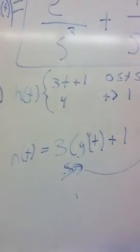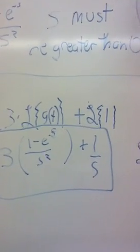And when you're asking for the Laplace transform of this one, it's pretty much going like that. And so the Laplace of h of t would be 3 times the Laplace of g of t plus the Laplace of 1.